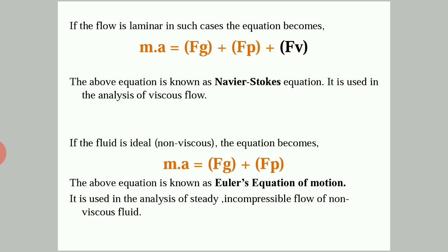If the fluid is ideal — that is, having no viscosity, no surface tension, and is incompressible — then the equation becomes: m·a = Fg + Fp, that is gravity force plus pressure force. This equation is known as Euler's equation of motion, and it is used in the analysis of steady, incompressible flow of non-viscous fluid.